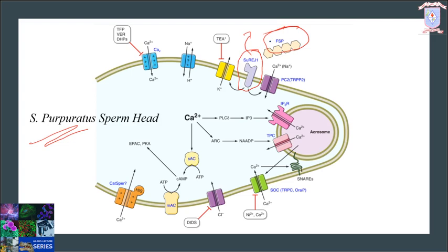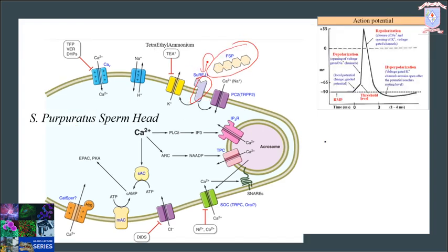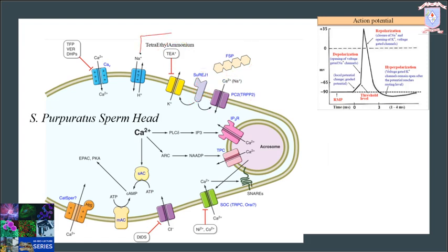The receptor full name is Sea Urchin Receptor for Egg Jelly, SUREJ1, and it is localized along the length of the flagellum and also as a thin band at the tip of the sperm head overlying the acrosomal vesicle. Within seconds, binding of FSP induces opening of two channels: one is a TEA-sensitive potassium channel, and the second is a calcium channel.